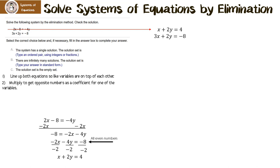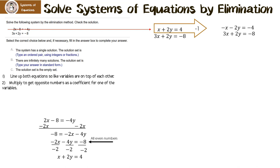Next is to multiply one or both equations so I get opposite numbers. I notice I have a plus 2y and a plus 2y — they're practically opposite already. I'm going to multiply one of them by negative 1. Negative 1 times x is negative x, negative 1 times 2y is negative 2y, and negative 1 times 4 is negative 4. I rewrite the second equation as is. Now when I add straight down, I end up with 2x plus 0y, which eliminates one of the variables.